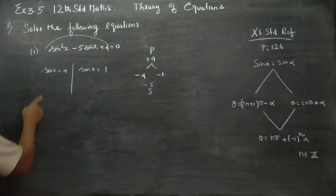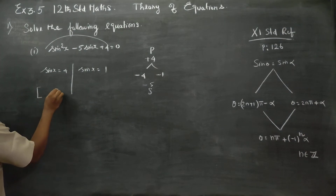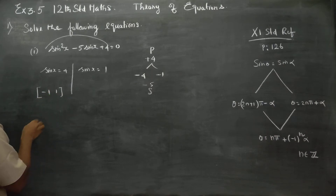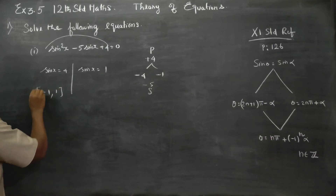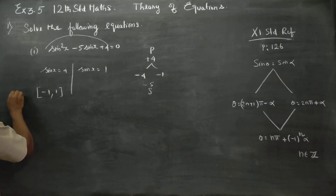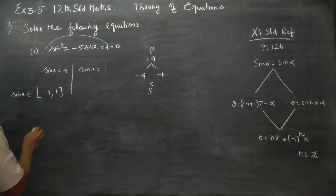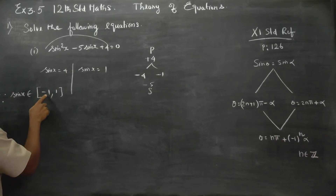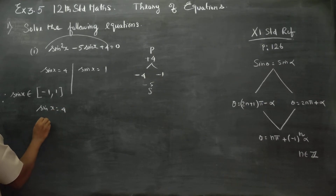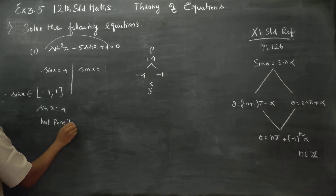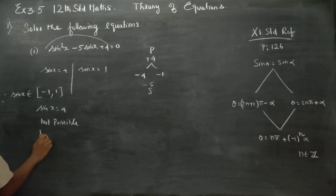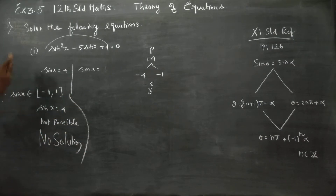Put it in: sin x is equal to 4, sin x is equal to 1. Sin x belongs to minus 1 to plus 1. Since sin x equals 4 is not possible, it is not possible. Therefore, sin x = 4 gives no solution. First part is no solution.